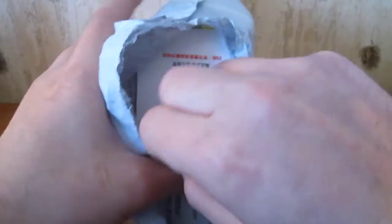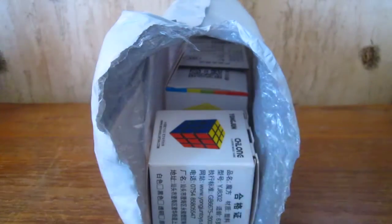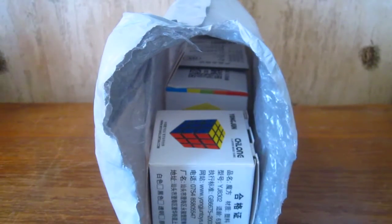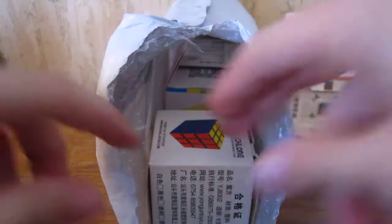So it looks like we have an MF3RS here. Try to be careful not to show my address. So it looks like a regular stickerless cube, MF3RS.